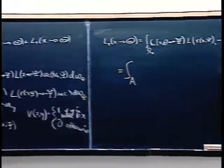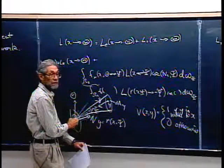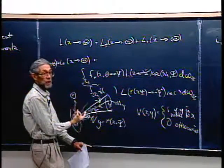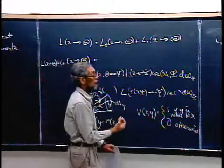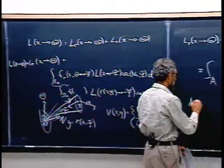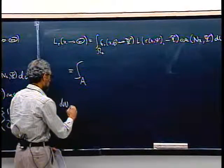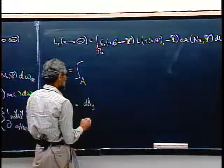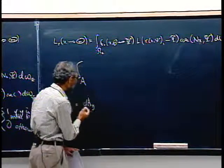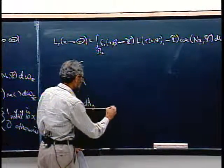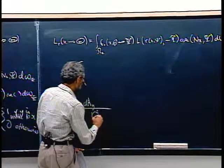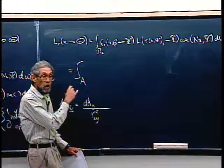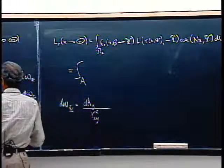I want to rewrite this integral as an integral over all area of all surfaces in the scene — capital A stands for all surfaces, so it's really a bunch of separate integrals over each wall, etc. To convert, I need to turn dA_y into solid angles at x, because the current integral is d_omega. The formula is: d_omega for psi equals dA_y divided by r(x,y) squared — the square of the distance between x and y — because it's supposed to be area on a unit sphere.